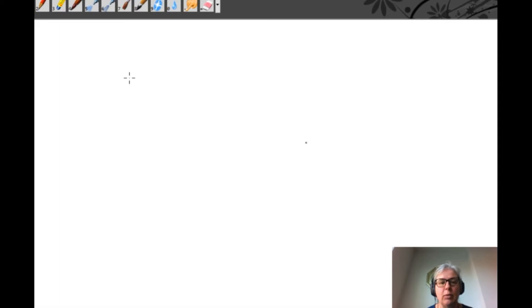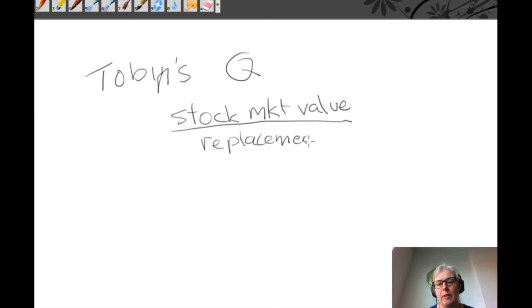A good example of this is what we call Tobin's Q. Now Tobin's Q is the ratio of the stock market value of an asset, usually a physical asset, but we tend to use it more broadly than that, over the replacement value. So it's very useful in thinking about investment.